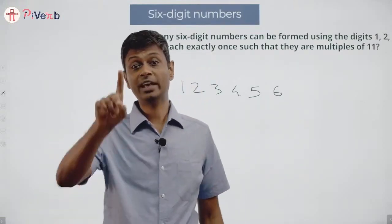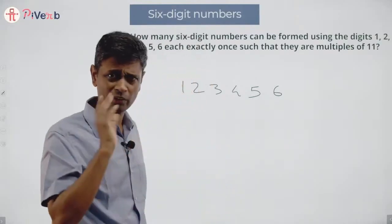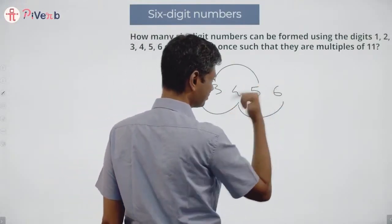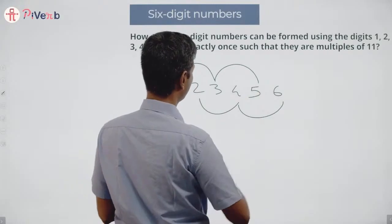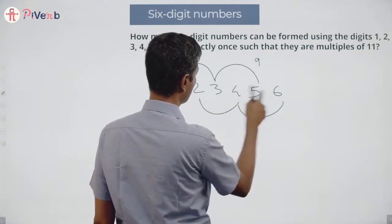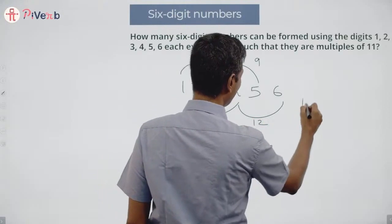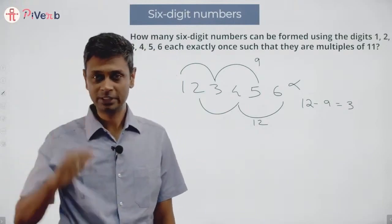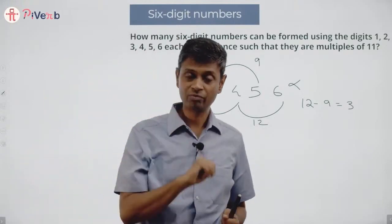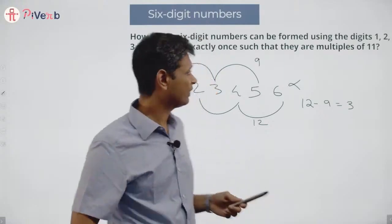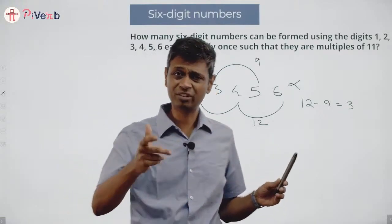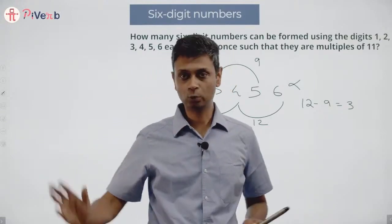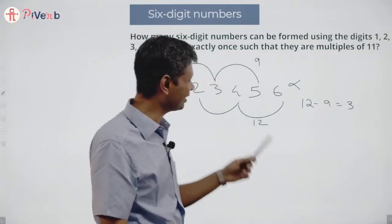If it turns out to be a multiple of 11, I already have one number. How do I test for a multiple of 11? You know the test of divisibility: add these digits, add these digits. 1 plus 3 is 4, 4 plus 5 is 9, 2 plus 4 is 6, 6 plus 6 is 12. Difference between 12 and 9 is 3 — this number is not a multiple of 11. If I add odd-position digits and then even-position digits and find the difference, the difference should be zero or a multiple of 11.